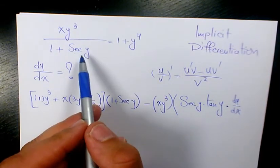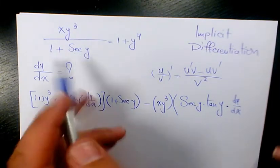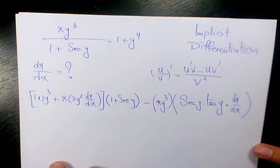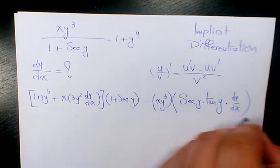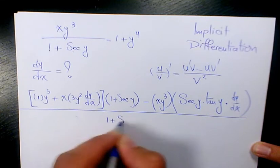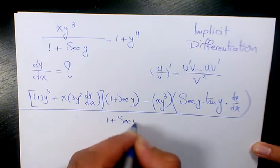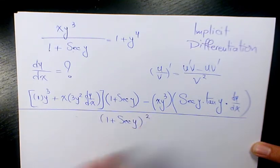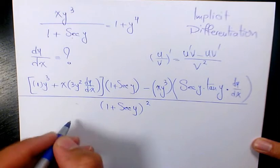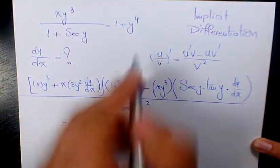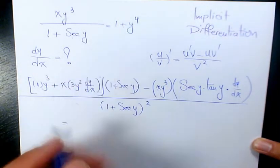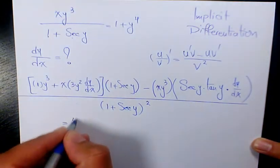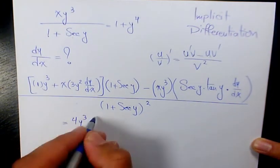Because the derivative of secant is secant times tangent. That's divided by 1 plus secant y to the power of 2, equals the derivative of 1 which is 0, plus the derivative of y to the 4 which is 4y cubed dy over dx.